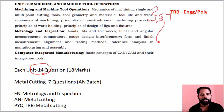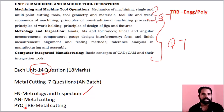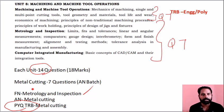This is from the afternoon batch. If you look at the morning batch, there is some weightage in metrology and inspection, and some weightage in metal cuttings. If you look at the previous TRB, there is some weightage in production and also in metal cuttings.